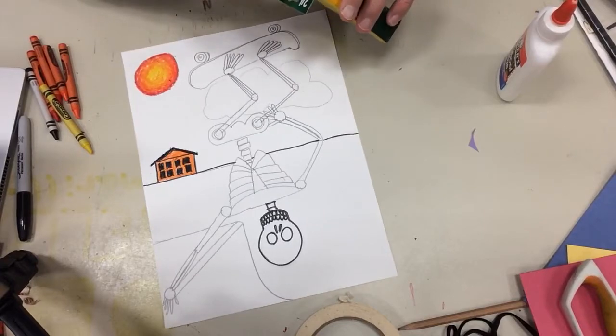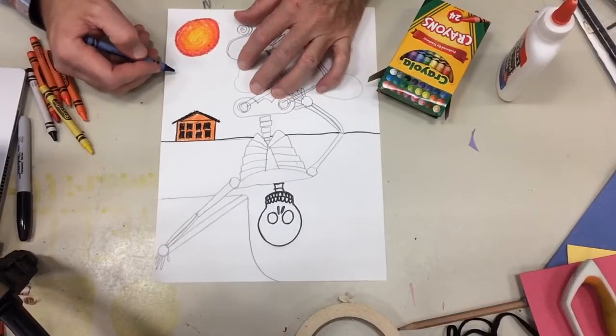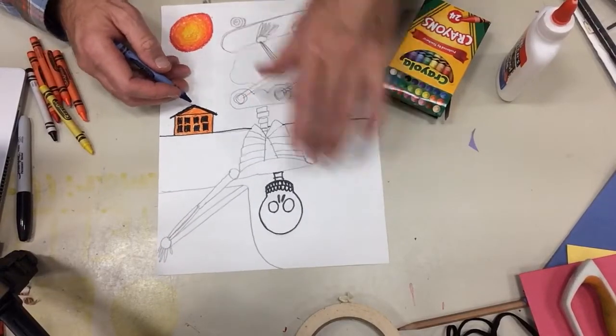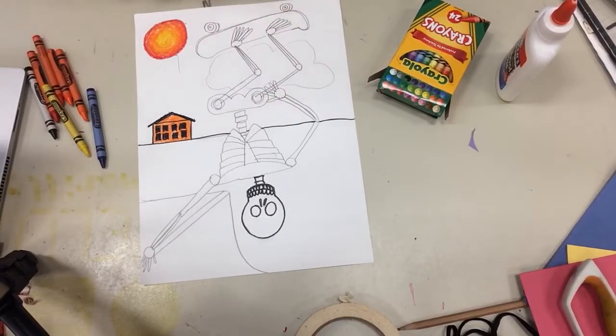If you go to color the sky, you can mix different colors of blue. This is cerulean blue. But when you color a big space like this or this, always try to color in the same direction. So, let me outline my sun first.